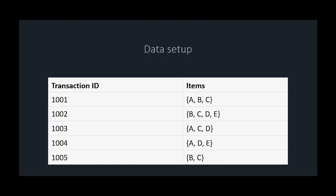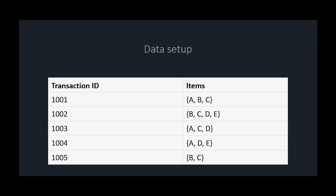Here is some data with five transactions — this is what's called transactional data. Instead of each thing being a column, you get what the person bought, kind of like a receipt. So it's a store that just sells A, B, C, D, E — that's all they sell, five items.